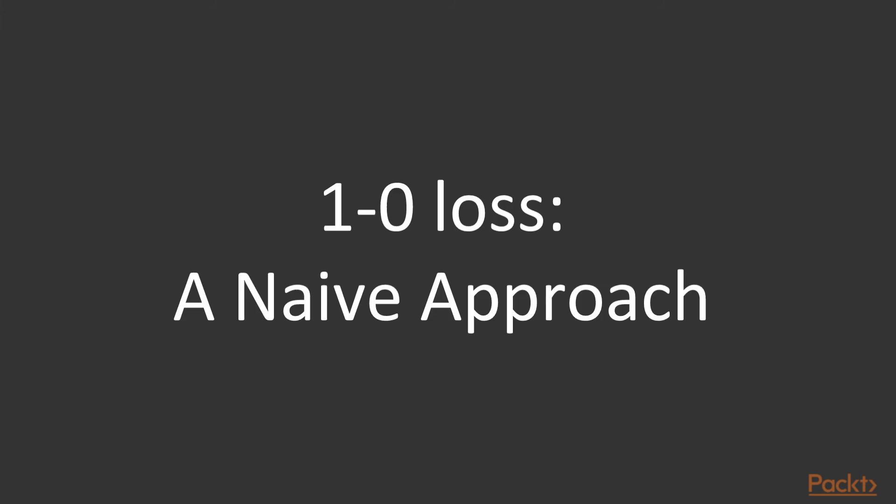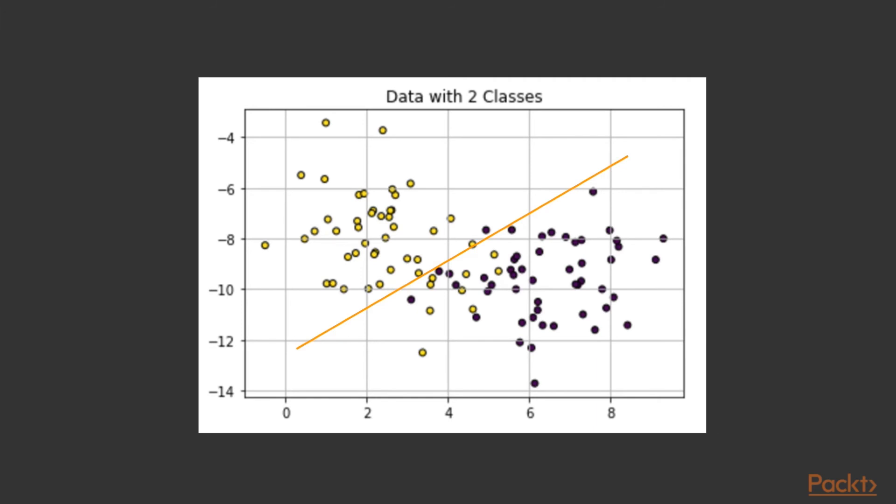So here would be a case in which we really can't separate these two without making some error. So a naive approach to do this would be something called a 1-0 loss. So say we draw a line and certain points fall on one side and certain points fall on the other side, but there's some mixing, there's some mistakes in here. So in this case, there would be no mistake because the yellow is on the left side, which we want it to be. So the error here would be zero. And if the yellow falls on the wrong side, on the right side of this line, we say the error is 1. This is a 0-1 loss. Either you're right or you're wrong and that's what the loss is.